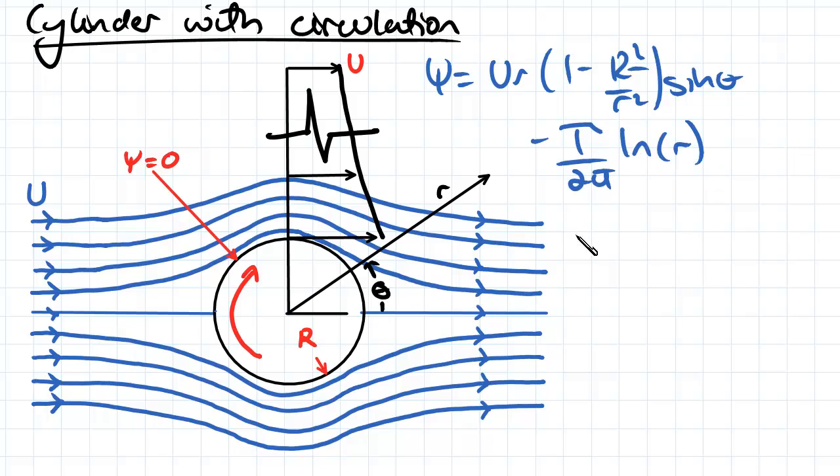And then for our velocity potential, what we have is Ur(1 minus r squared over r squared) cos theta, and then plus the circulation divided by 2π times theta.